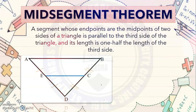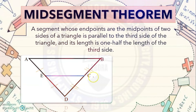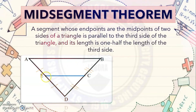The next theorem is the Mid-Segment Theorem. According to the Mid-Segment Theorem, a segment whose endpoints are the midpoints of two sides of a triangle is parallel to the third side of the triangle, and its length is one half the length of the third side.